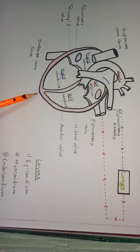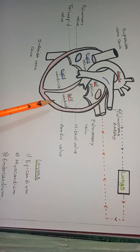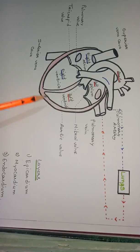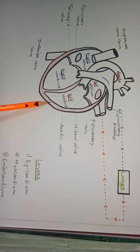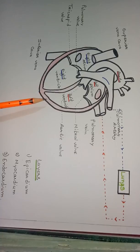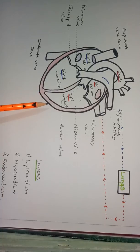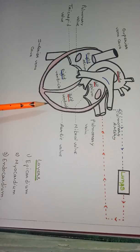The epicardium is the outer layer which covers the heart from outside. The main function of the epicardium is to protect the heart from the outer surface. Below the epicardium is the myocardium. The myocardium is the muscular layer which is thick in size.